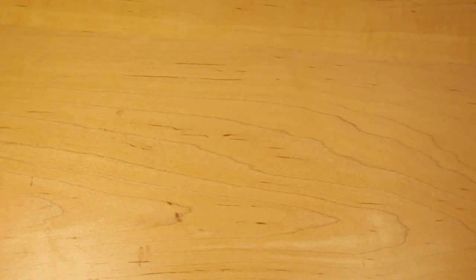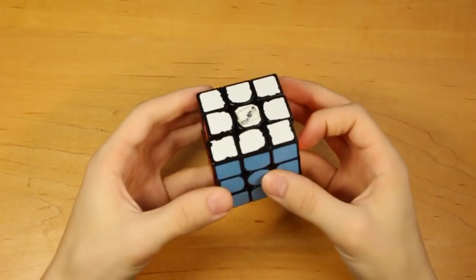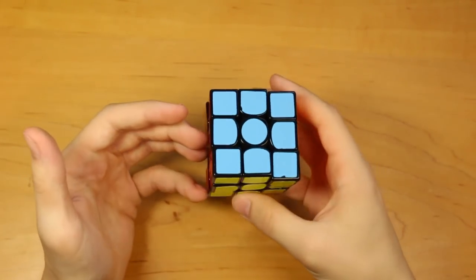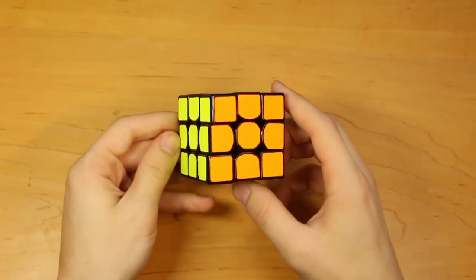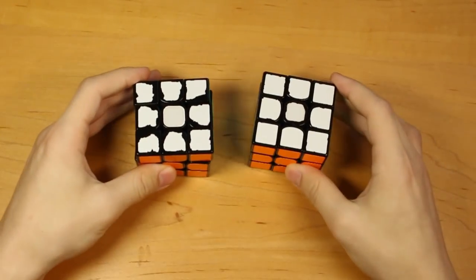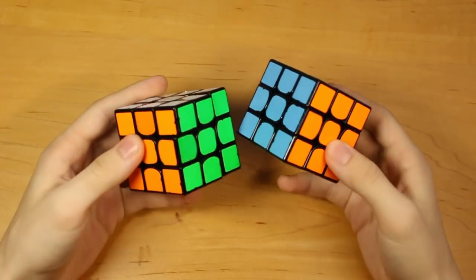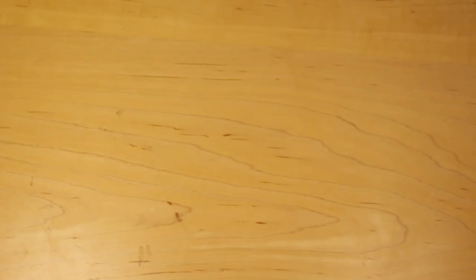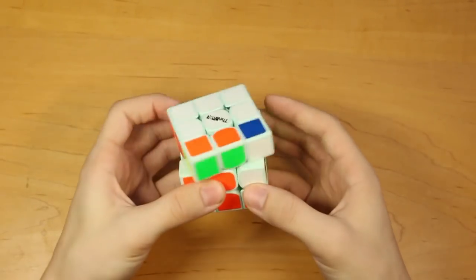For 3x3s, let's start first with all of my Qiyi 3x3s. This, I believe, was my first ever Valk. It is not magnetic, and it has a lot of wacky stickers on it, because I got bored. Here I have two stickered Valk Ms, which are pretty cool. But they're both kind of slow, so I don't really use them that much.